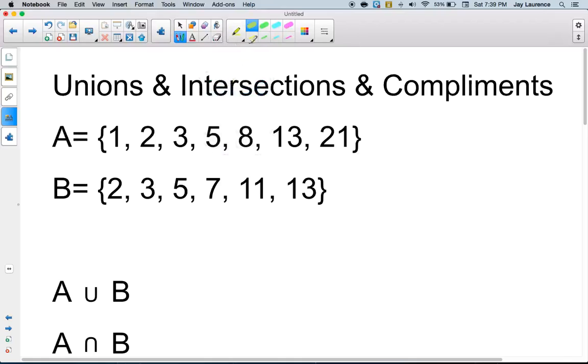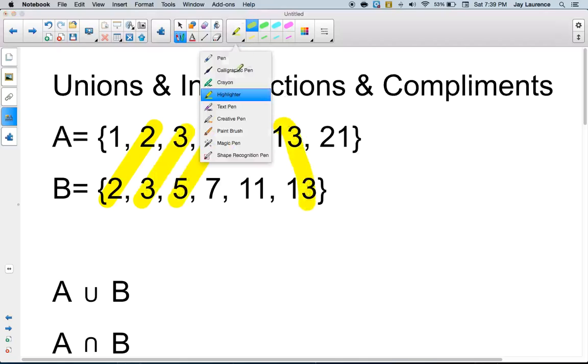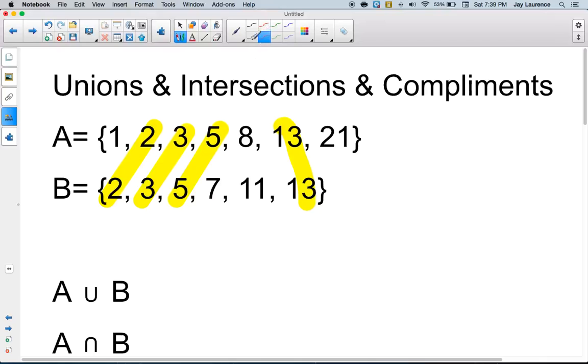So I'll tell you what I'm going to do. I'm going to get a highlighter here, and I'm going to highlight everything that shows up in both sets, and so I see 2, I see 3, I see 5 in both sets, and I see 13 in both sets. Therefore, the union—excuse me, I keep saying union, the intersection,